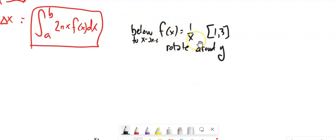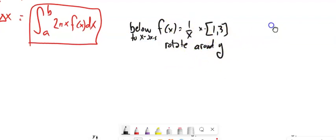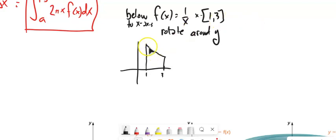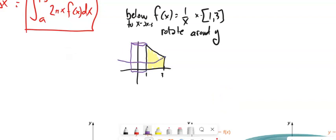So we have the function f(x) = 1/x. We're going to let x run from 1 to 3, take the area below this between it and the x-axis, and then rotate it around the Y-axis. You can use Desmos to see the shape. We're going to find that volume using the shell method.